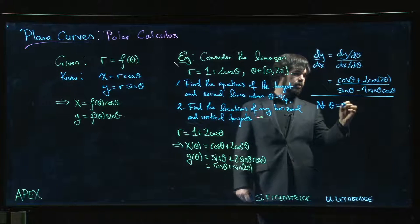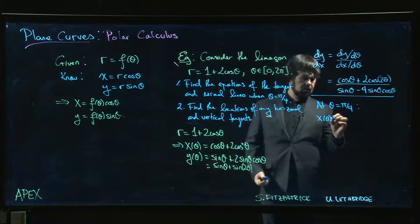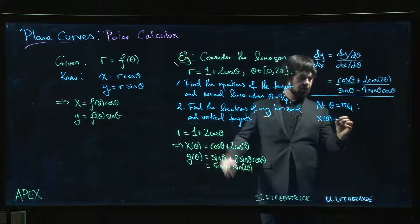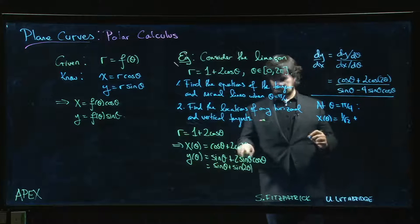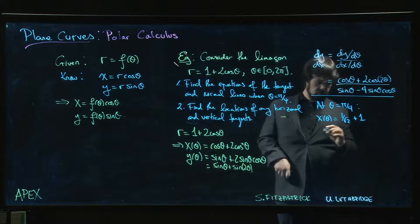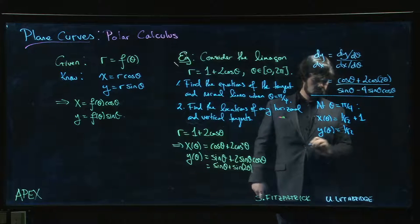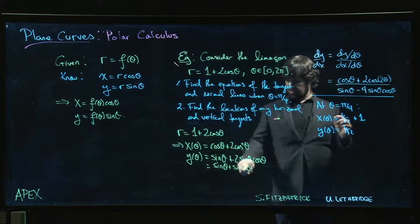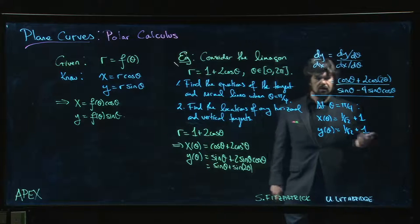If theta is equal to pi over 4, well, x of theta is going to be cos theta, 1 over root 2, plus 2 times cos squared theta. So, 1 over root 2 squared gives me a half, times 2 gives me 1. Y of theta will be 1 over root 2 plus sine 2 theta. So sine of pi over 2 is 1. So 1 over root 2 plus 1. So x and y are equal.